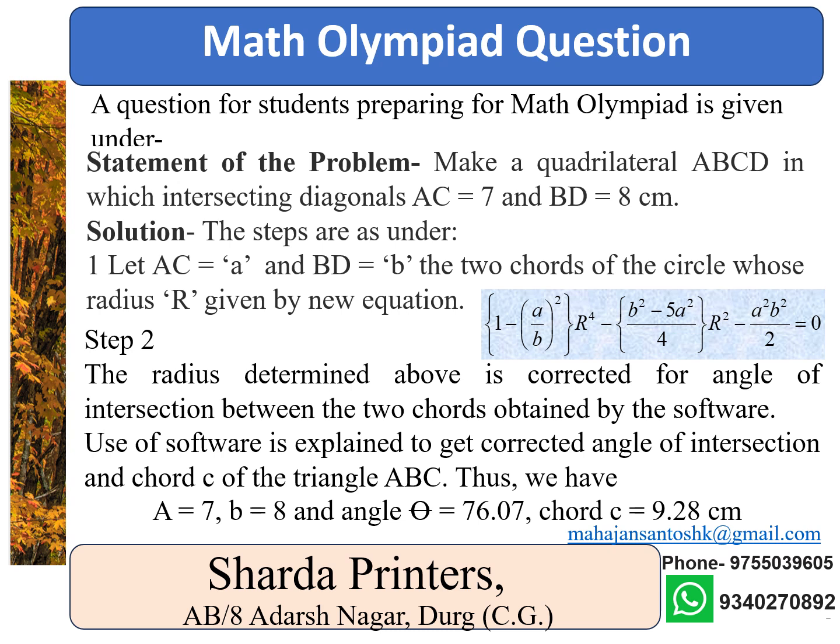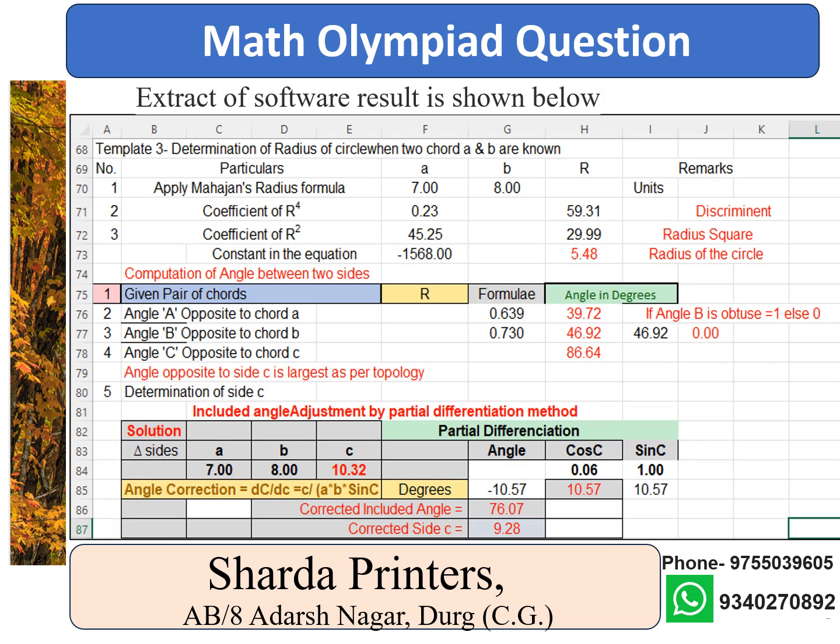Further, determine the third chord C and the angle of intersection of the two chords using software. The extract of software processing for the result is shown below. Chord C is equal to 9.28 cm and the intersecting angle between A and B is equal to 76.07 degrees.